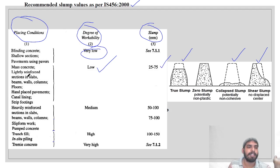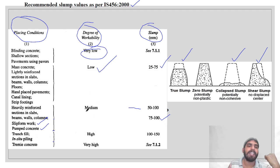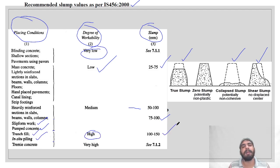For sections like slabs, beams, walls, floors, and canal lining, medium workability is recommended. For heavily reinforced sections — slabs, beams, walls, columns — medium workability of 50 to 100 mm is recommended. For slip formwork and pumped concrete, 75 to 100 mm slump is recommended. For trench fill and in-situ piling, high workability of 100 to 150 mm slump is necessary.